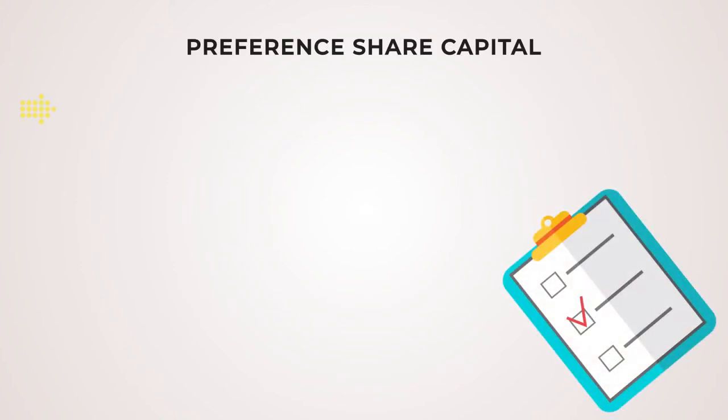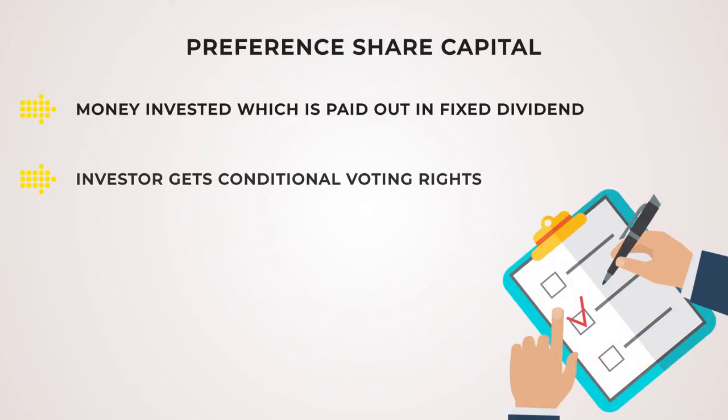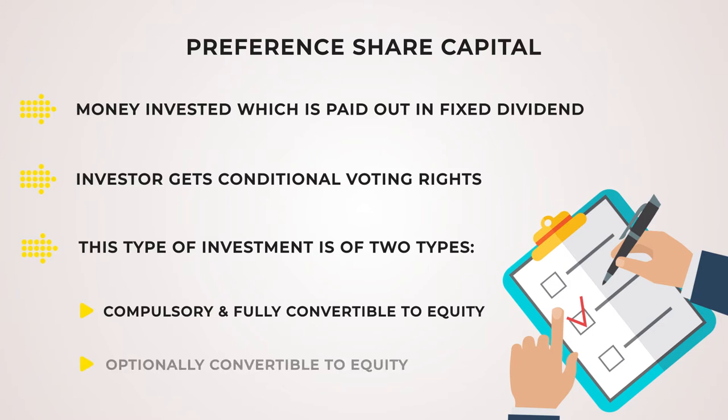The second method is the preference share capital method, which involves money invested that is paid out in fixed dividend to the investor and gets converted into conditional voting rights. Preference share capital investment is of two types: compulsory and fully convertible to equity, which is treated as equity under FDI policy; and optionally convertible to equity, which is treated as external commercial borrowings.